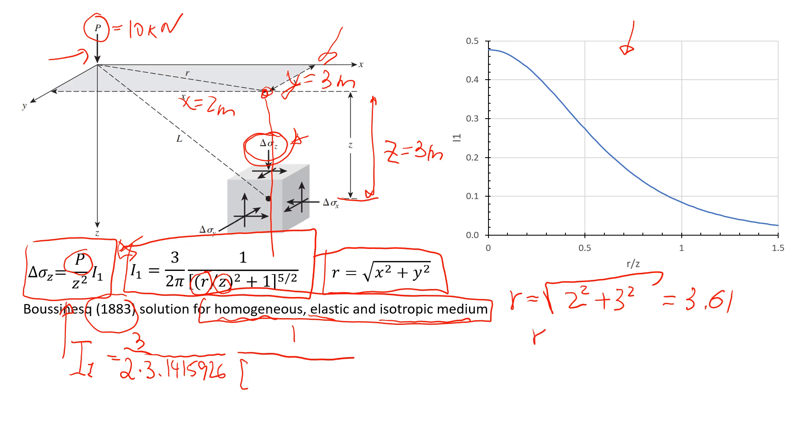I think if we use r divided by z, it will be 3.61. And z we assume was 3 meters. So that's the assumption we made for this problem. So that will give us 1.202, right? So it's kind of like simple math.